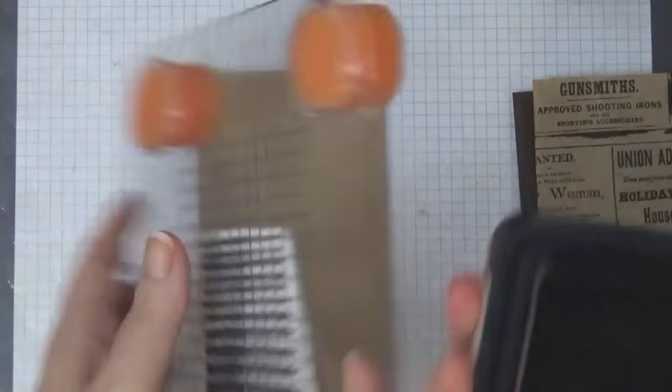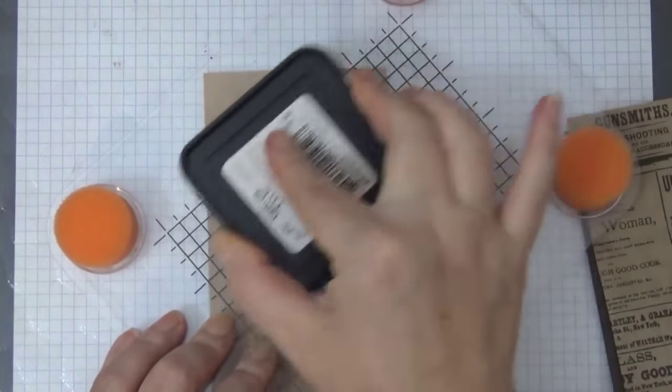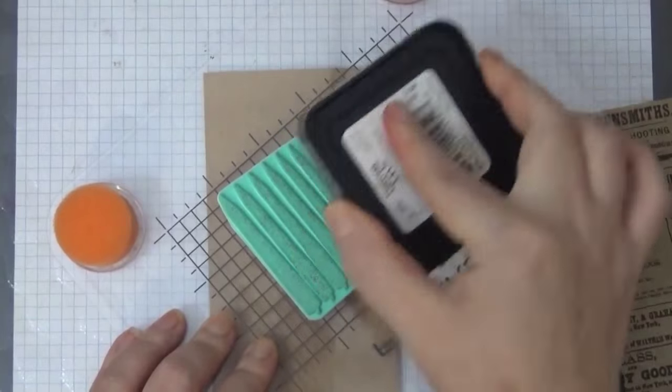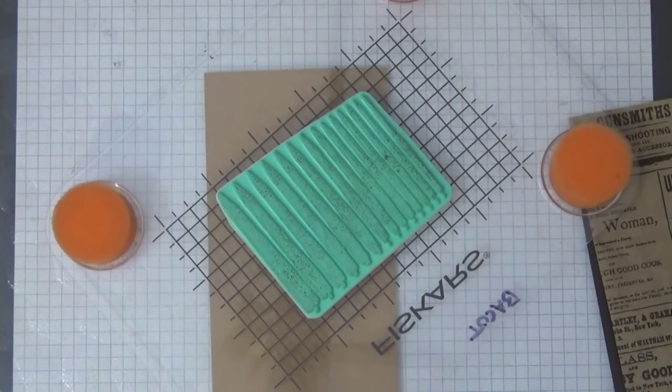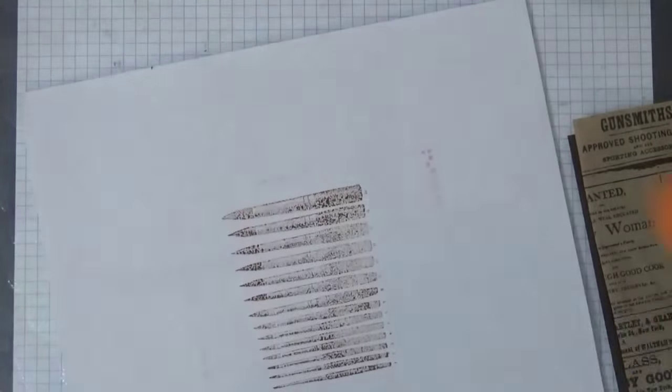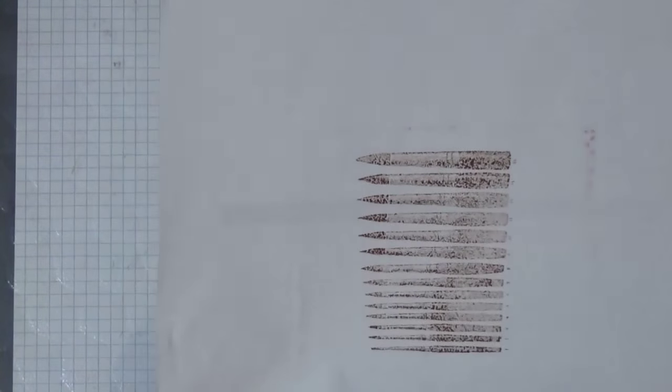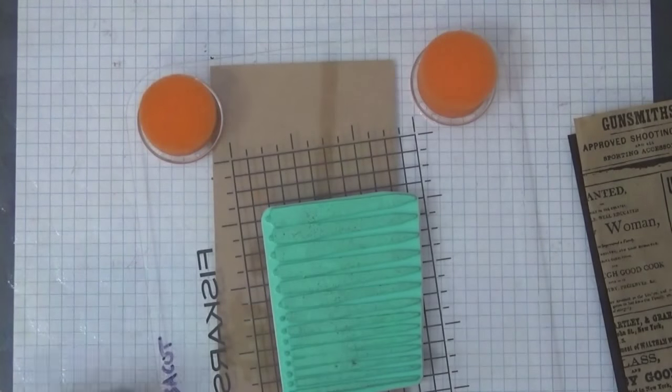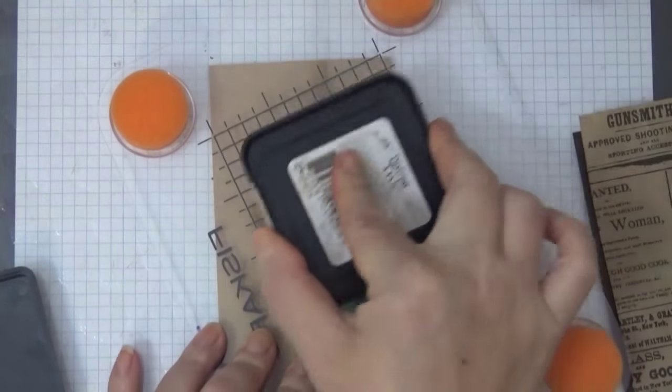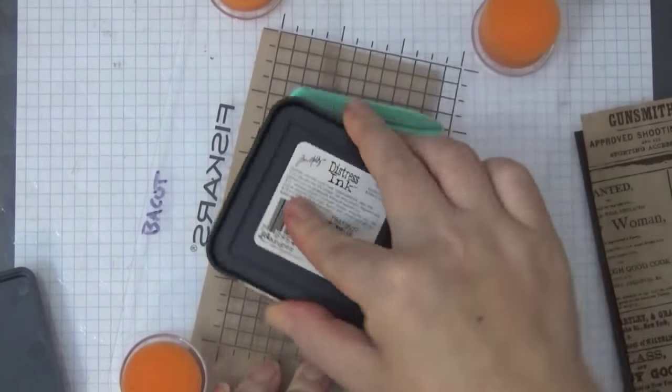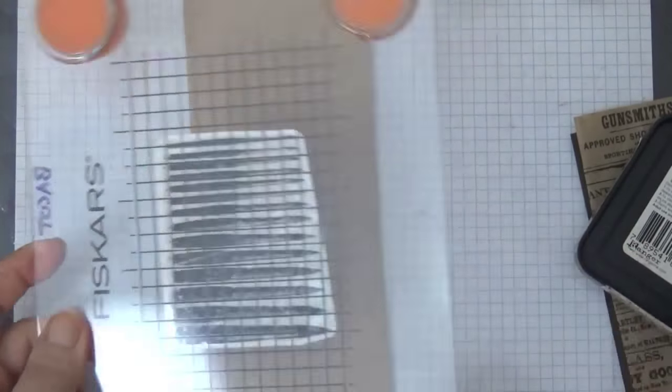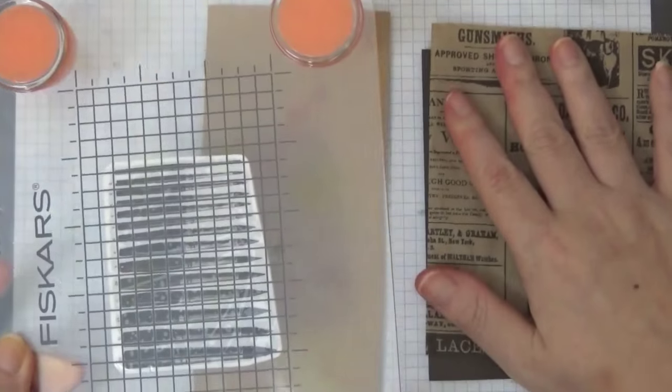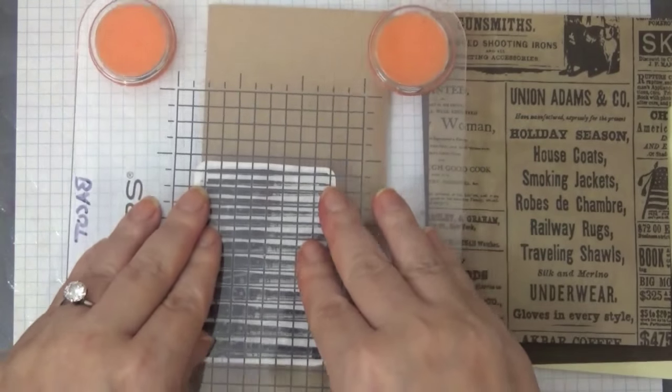I'm going to be using the vintage photo distress ink because I wanted to make it look more distressed. Distress inks do not stamp out clearly—that is not one of their properties. So if you're looking for a crisp impression, this is not the ink to use. But I am using the vintage photo and I kind of test it out on a piece of paper.